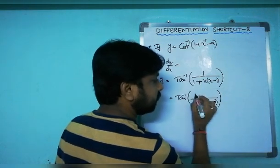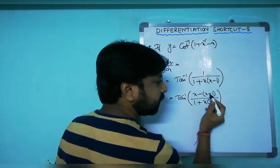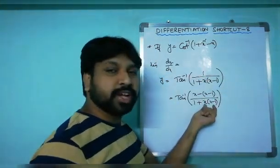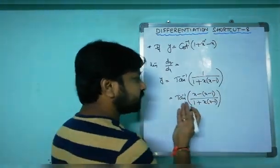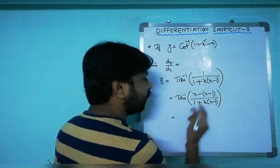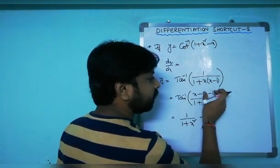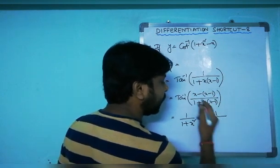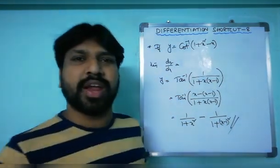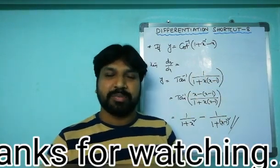Adjusting the numerator: write 1 as x minus (x minus 1), so the expression becomes tan⁻¹((x minus (x minus 1))/(1 plus x(x minus 1))). This matches the form tan⁻¹((f(x) minus f(y))/(1 plus f(x)·f(y))). Applying the shortcut: derivative of x is 1/(1 plus x²), minus derivative of (x minus 1) which is 1/(1 plus (x minus 1)²). That's your answer — hardly three seconds with this shortcut!